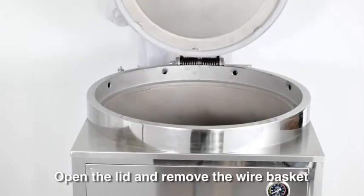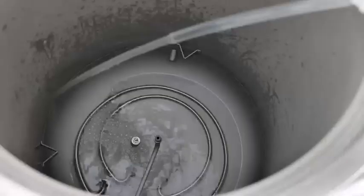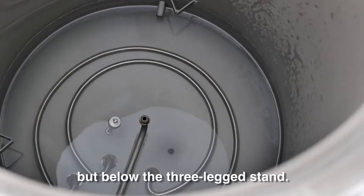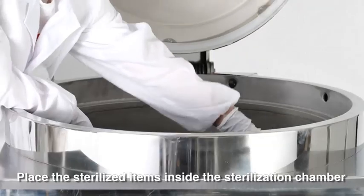Open the lid and remove the wire basket and inner container. Add water, ensuring it's above the float switch but below the three ledges of stainless steel. Place the sterilized items inside the sterilization chamber.